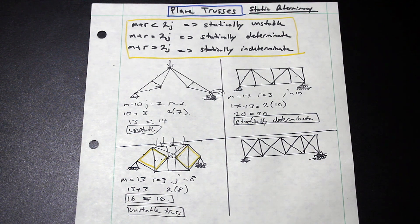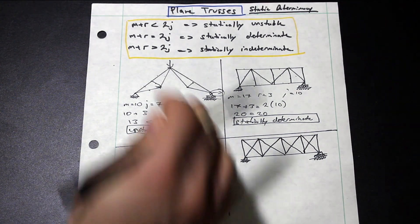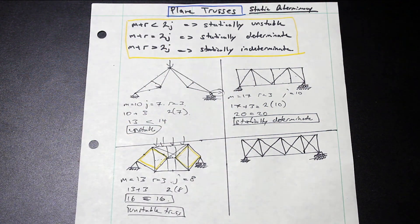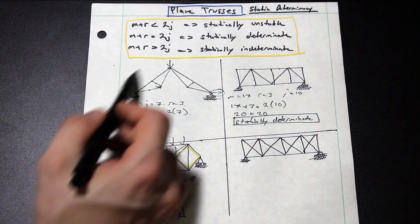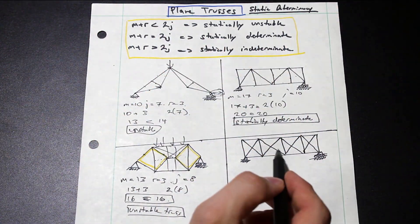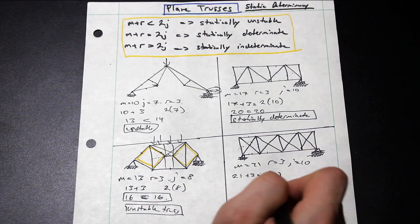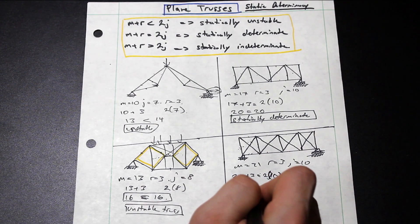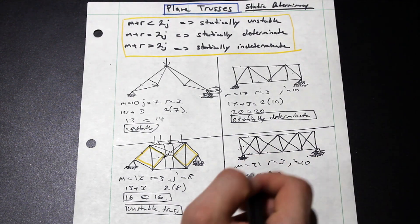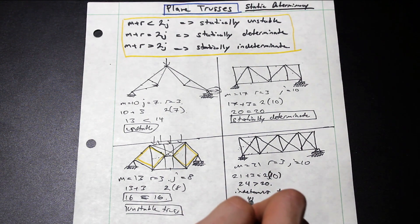So another kind of trick, so this is actually unstable due to the configuration. So it's just something that you're going to have to practice. You're going to have to look at it, look for parallel members that are supporting rigid members like this, and also look for tricks like this here where the truss can simply just move to the right. So let's take a look at the last one. We have 24 is greater than 20, so we have an indeterminate truss to the fourth degree.